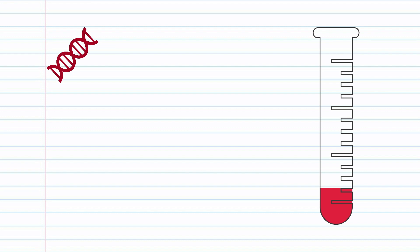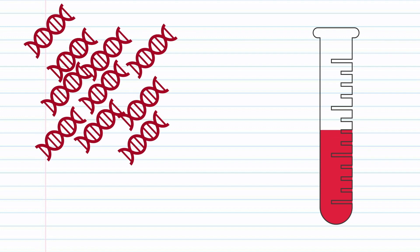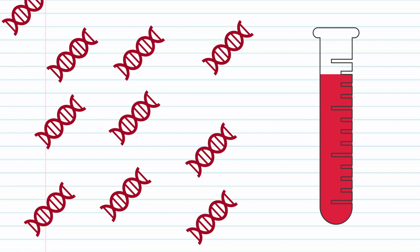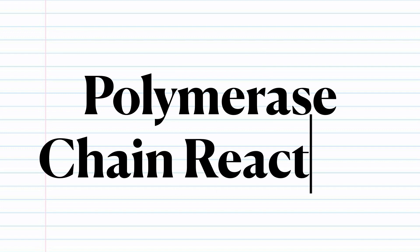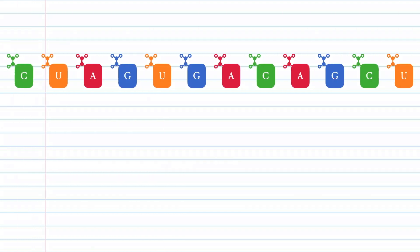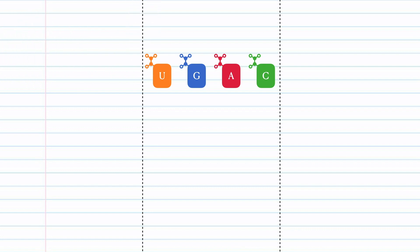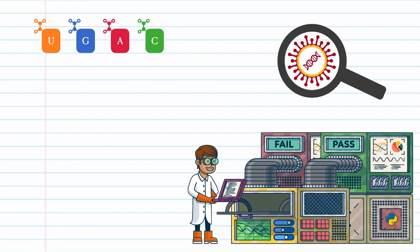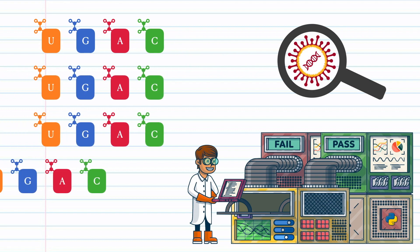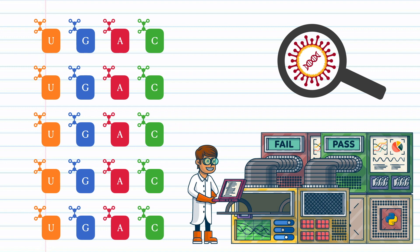To make the search easier, scientists make many, many copies of the sample, amplifying their chances of spotting the RNA they are looking for. This is done by a process called polymerase chain reaction, or PCR for short. In this process, scientists target a small portion of the RNA and cut it out of the entire RNA chain. This target fragment is then replicated over and over again until there's enough for it to be easily sequenced. Sequencing the resulting RNA and comparing it to the virus allows scientists to confirm whether or not a person is infected.